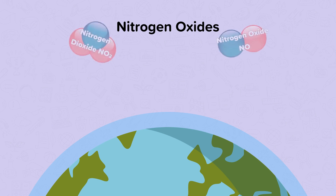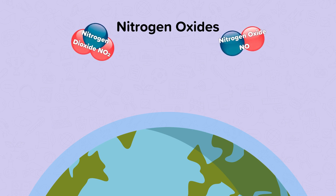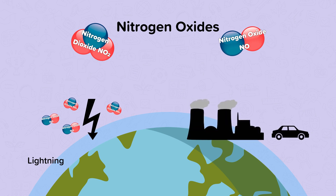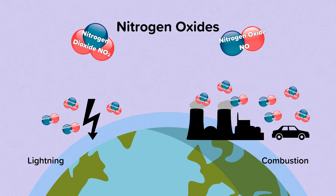Nitrogen dioxide is a compound made up of one nitrogen atom and two oxygen atoms. Nitrogen oxide is made up of one nitrogen atom and one oxygen atom. Nitrogen oxides are produced naturally when lightning strikes. They are also produced as a waste product of the combustion of coal in power stations, as well as fuel combustion in cars and other forms of transport.